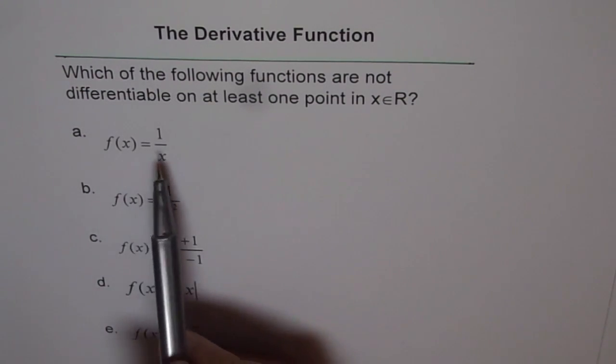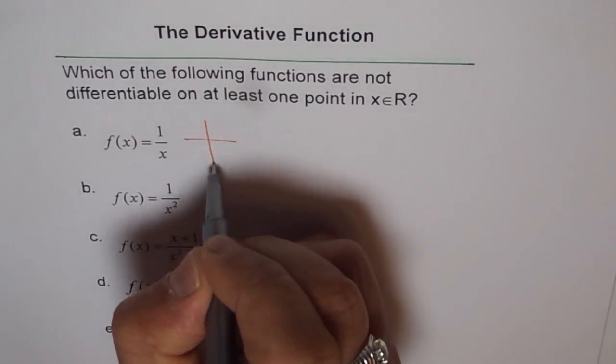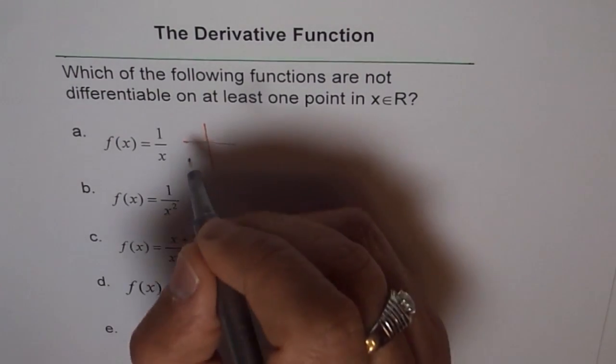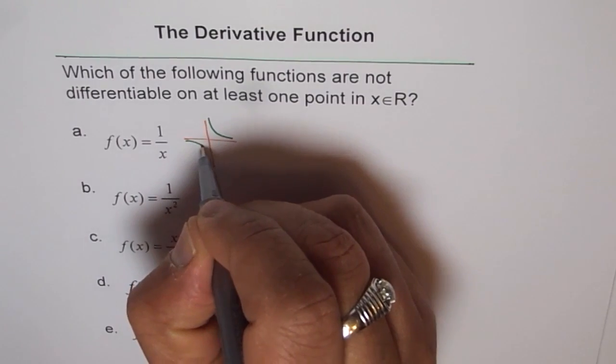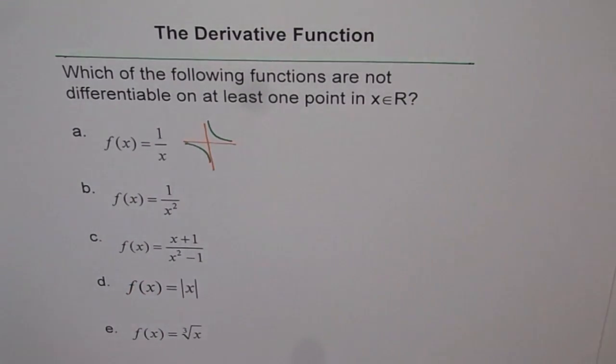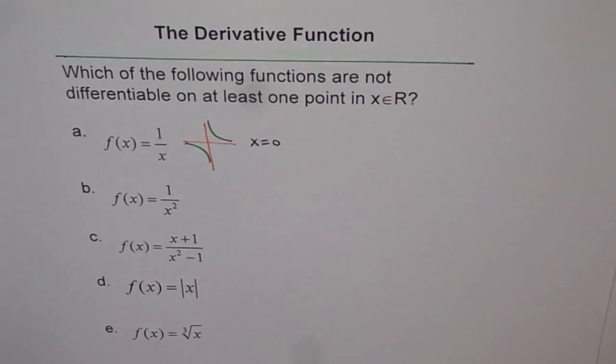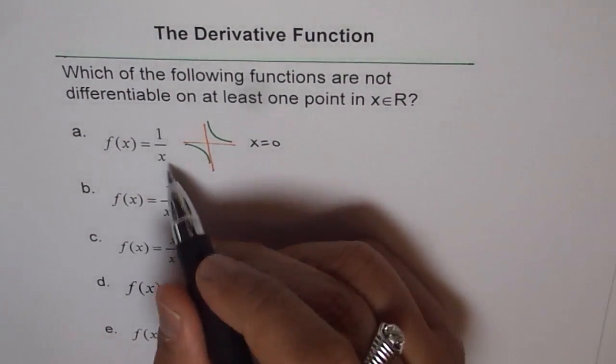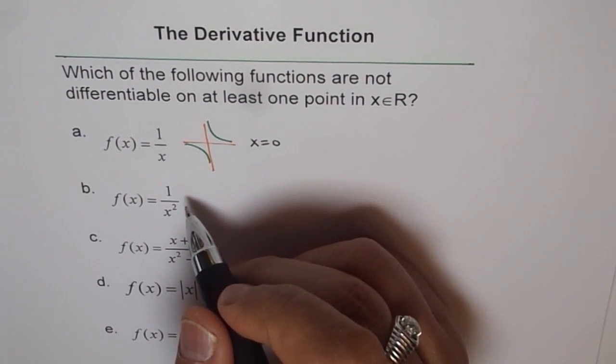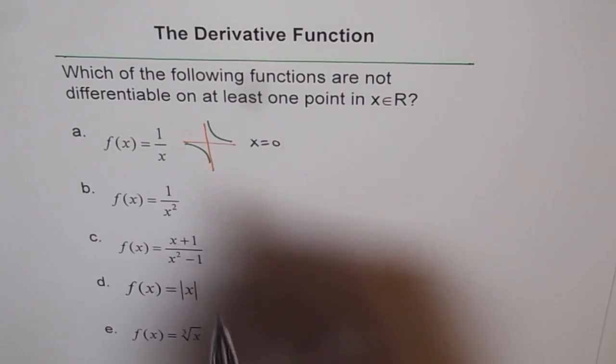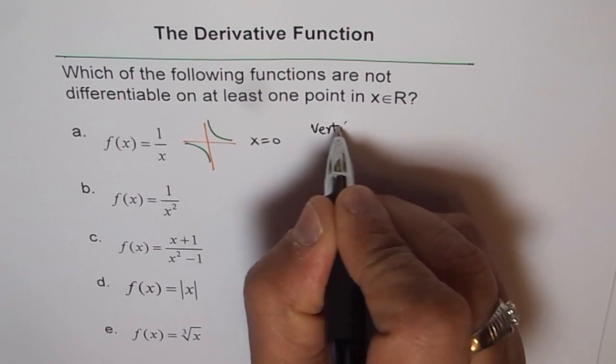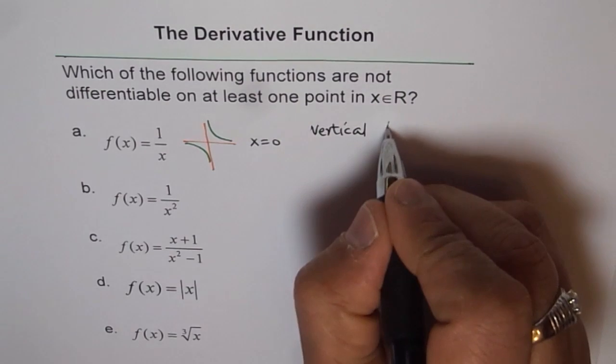A, f of x equals 1 over x. So 1 over x can be drawn like this. You find it is discontinuous at x equals 0. So at x equals 0, the function is discontinuous. And therefore, you cannot draw a tangent there. It is not in its domain. So we say, the function is discontinuous. And therefore, it is not differentiable at that point. So vertical asymptote is one thing which we observe here. So type of discontinuity is vertical asymptote.